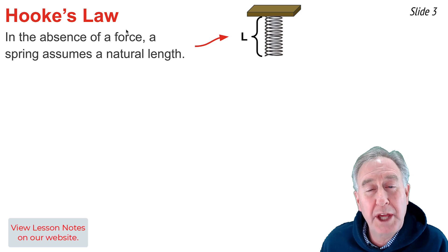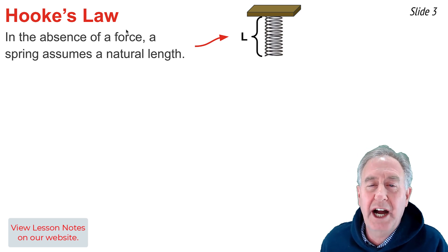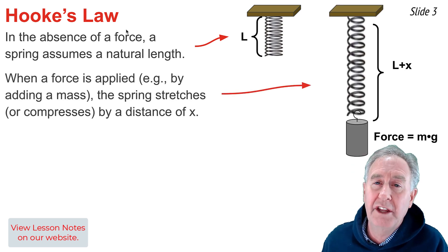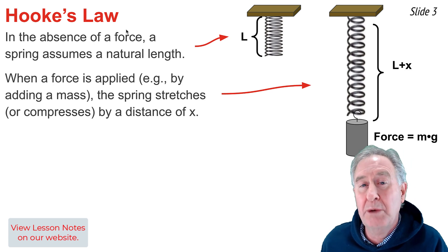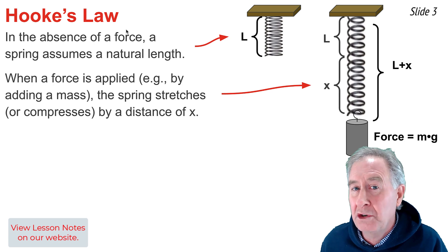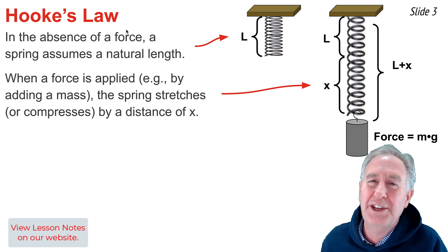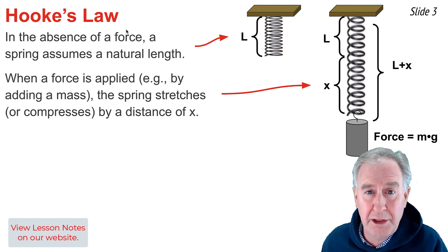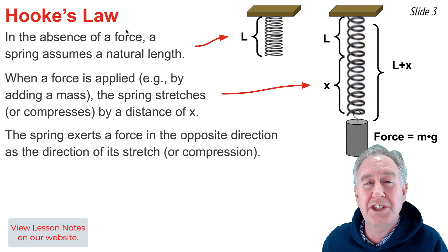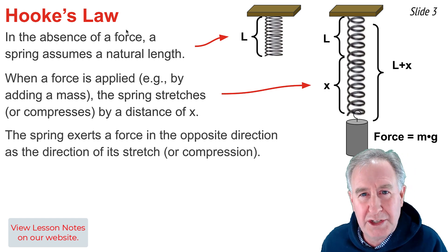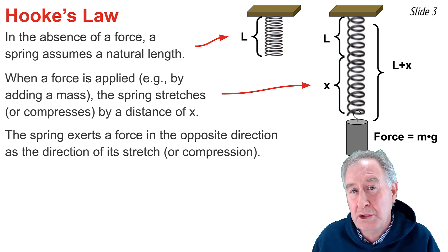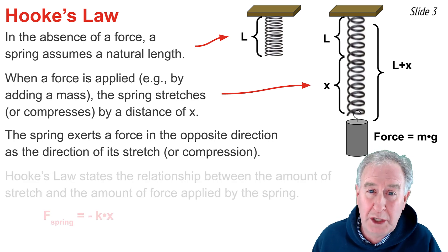Suppose that we have a spring and we hang it from a vertical support. The spring would stretch out to a natural length of L. If we apply a force to the spring by adding a mass to the end of it, the spring coils would begin to stretch and the spring would assume a new length equal to the original length L plus an additional stretch distance x. We can apply different forces to the spring by adding different masses and get different stretch distances, and by collecting a data set of spring force versus stretch distance, we could determine the relationship between the two quantities.